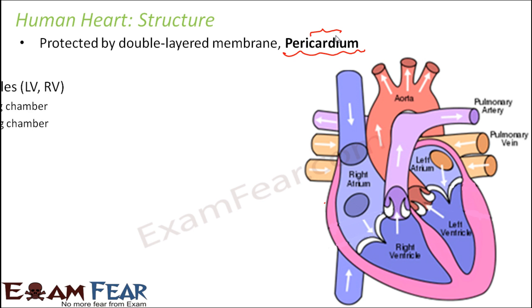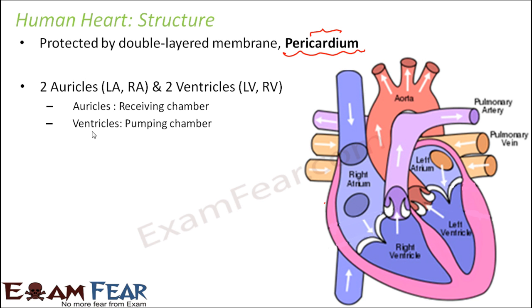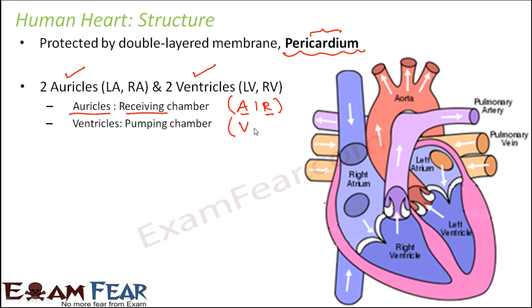The heart is also divided into four chambers — two auricles and two ventricles. Auricles are the receiving chambers — you can remember this using 'ARC': auricles are receiving chambers. Ventricles are pumping chambers — remember using 'VIP'. As you can see in this picture, this is the right auricle and this is the left auricle.